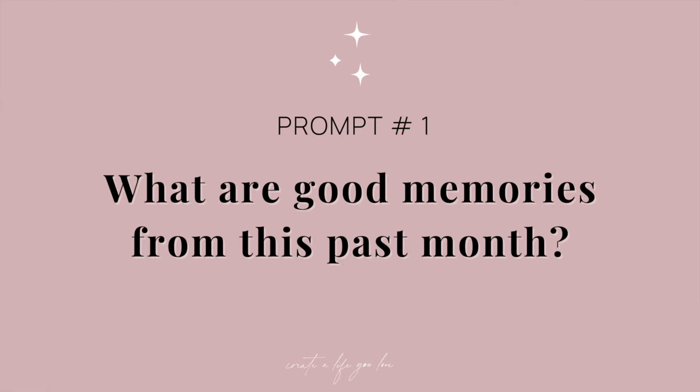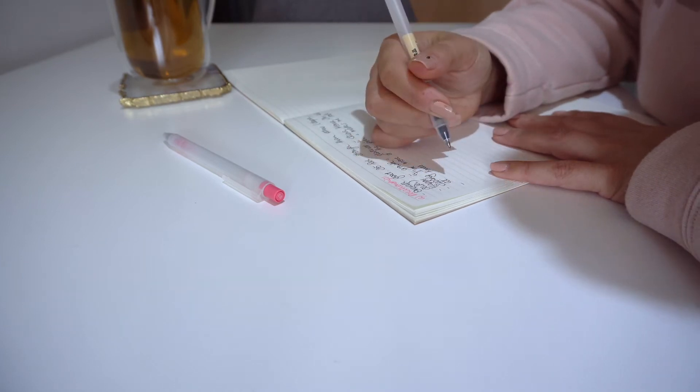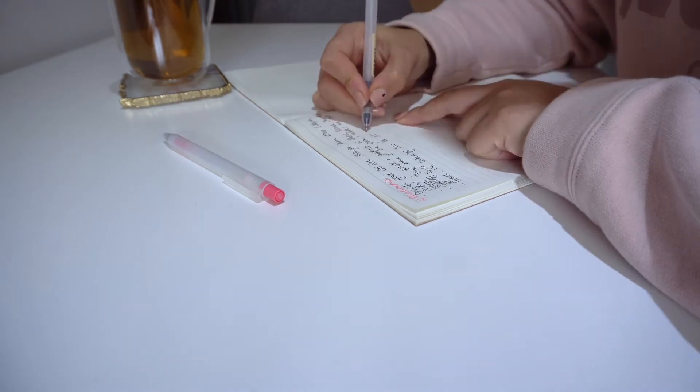The first journal prompt is: What are good memories from this past month that you want to remember? Try to come up with at least three good memories and write a few sentences for each. Why are these good memories?